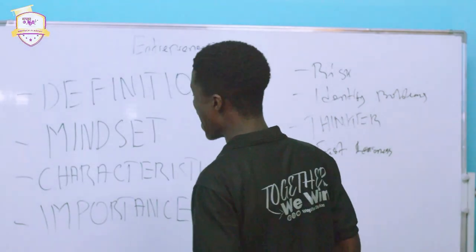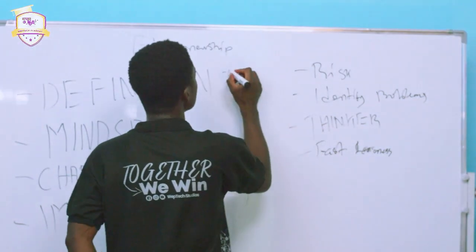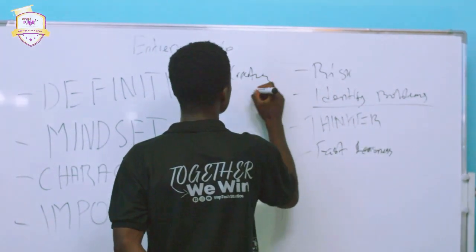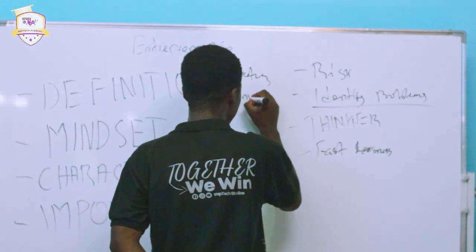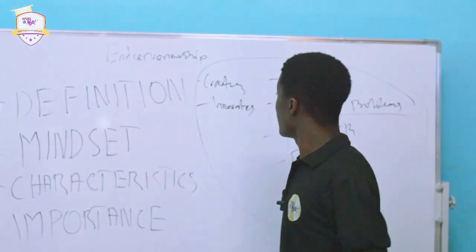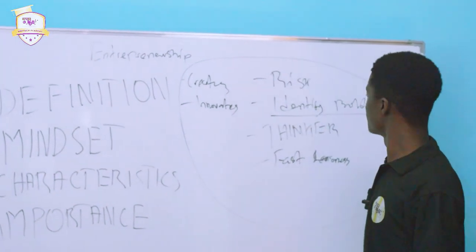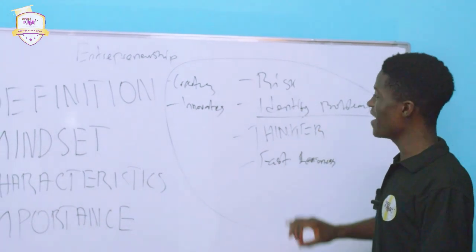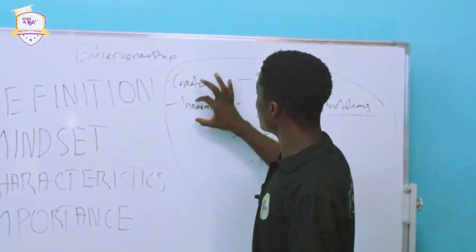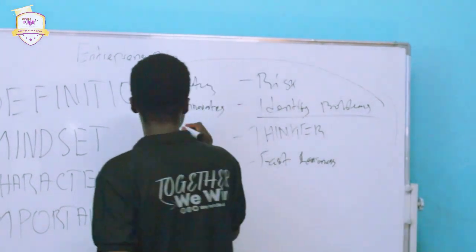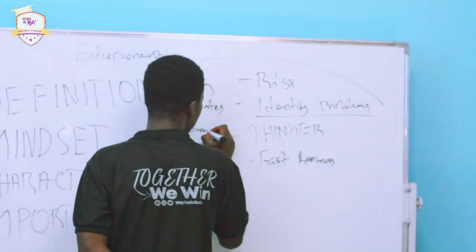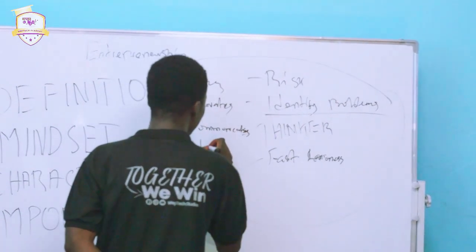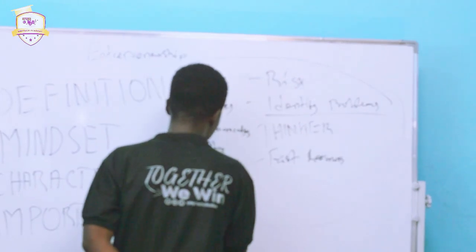So as an entrepreneur, you identify, you create, you innovate. An entrepreneur is a RICS taker. You identify problems, you think, you are a fast learner, you innovate, you create, and you communicate. You listen. You act.